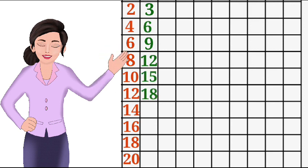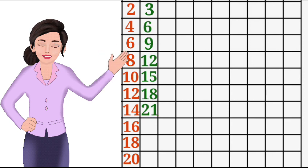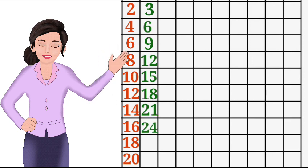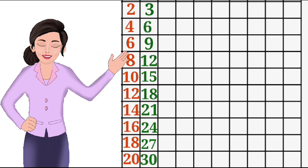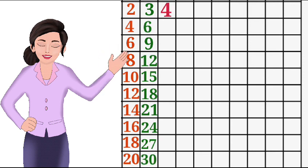3-7 the 21, 3-8 the 24, 3-9 the 27, 3-10 the 30. 4-1 the 4.